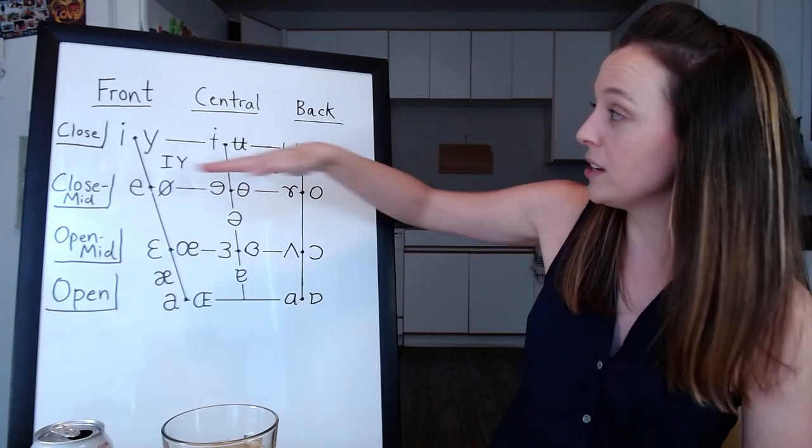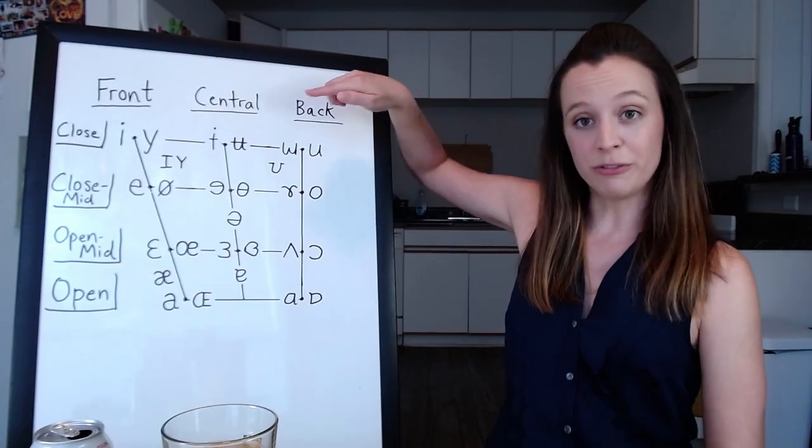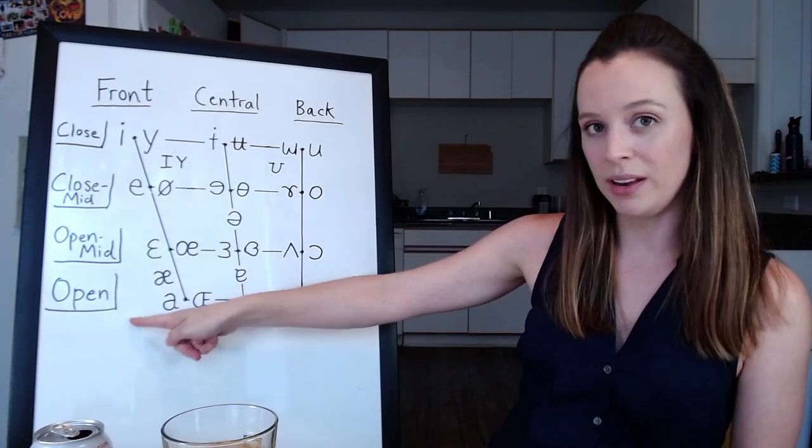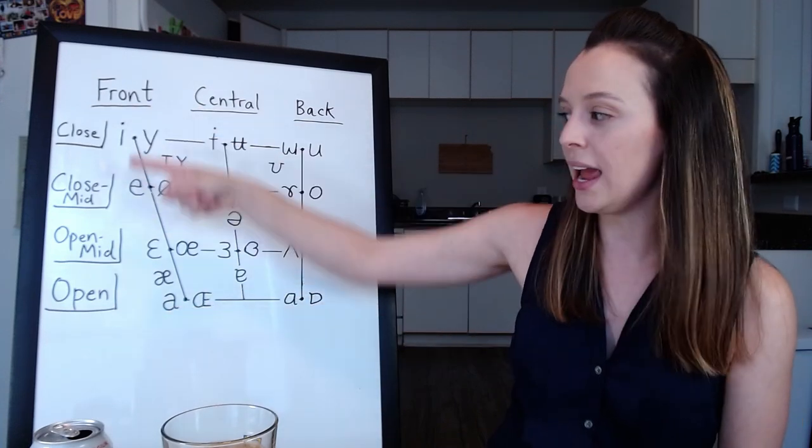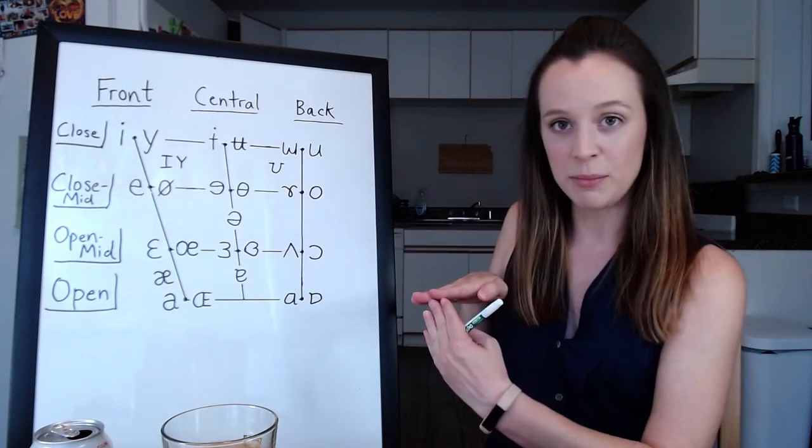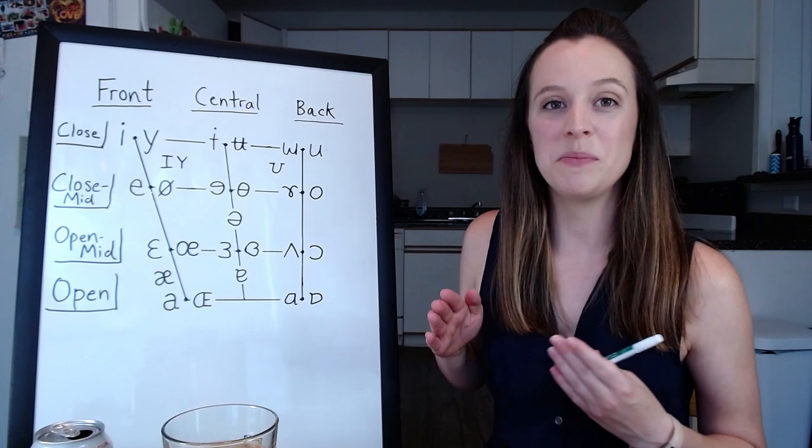It's got the horizontal one, which is front to back, and it has the vertical one, which is close to open, and sometimes this is called high to low. All of the axes, all of the information, it's telling you about the position of your tongue.